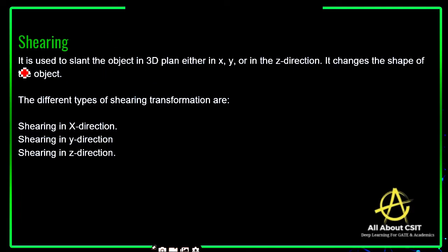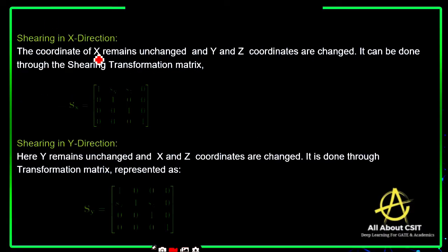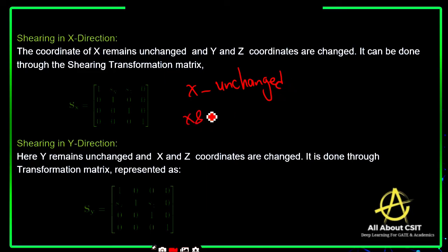Now coming to the next concept, which is shearing. It is used to slant the object in a 3D plane, either in the x, y, or z direction. The object is going to be slanted, changing its position by slanting to one of the axes. The different types of shearing transformations are x direction, y direction, and z direction. For shearing in the x direction, x remains unchanged and the y and z coordinates are changed.